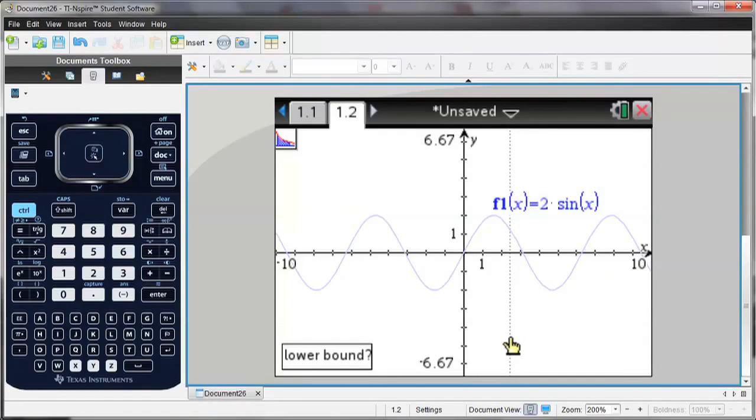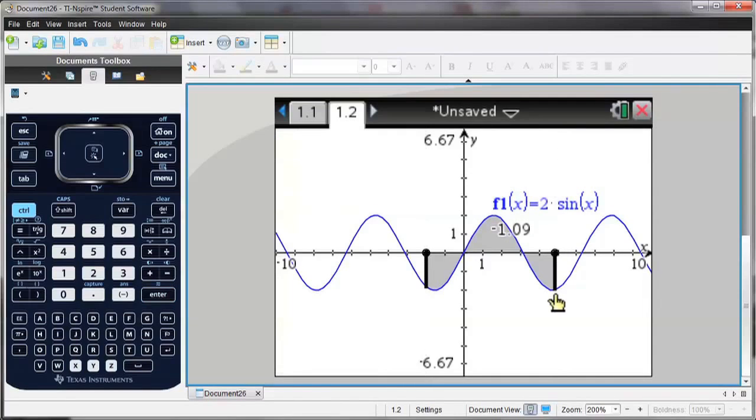So I can either type in my lower bound, or I can also drag using the mouse. Hit enter, and then this value, negative 1.09, that's the value of the integral between the two points.